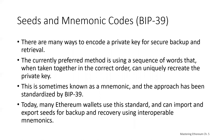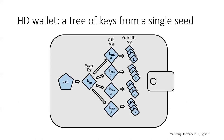HD wallets offer several advantages over simple deterministic wallets. The tree structure can be used to express organizational meaning or types of key payments. You can also create a sequence of public keys without exposing your private keys — for example, having a web server create public keys for people to send payments, while all private key creation is done on a more secure server. That's quite useful for web stores.